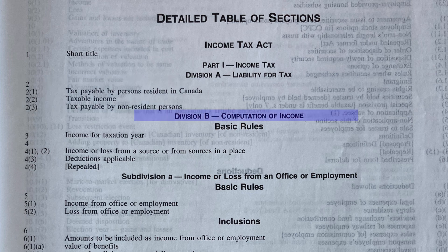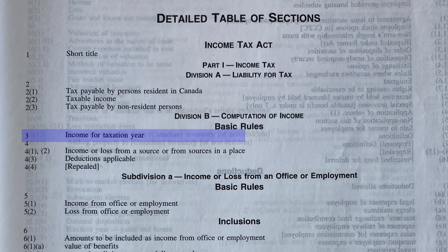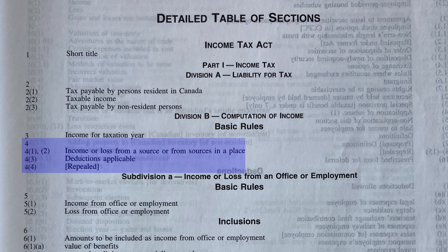Then Division B moves on from who's liable for tax and actually talks about the computation of income. Income is the figure that we'll use to help calculate someone's overall tax liability. It begins with the basic rules, and the basic rules for the computation of income consist of Section 3, Income for Taxation Year, and Section 4, which has Subsections 1, 2, and 3.